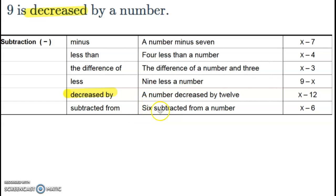Notice that the decreased part—a number decreased by 12, you got x minus 12. On this one you've got the number decreased, the 9 decreased by an unknown number, so you're going to have 9 minus x.